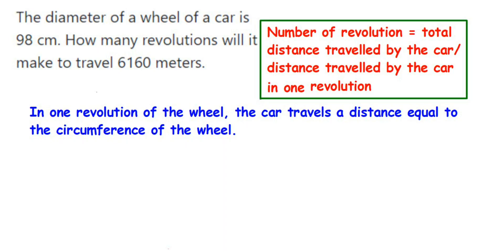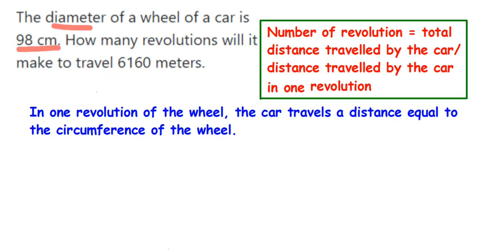Here's a question on circles. The diameter of a wheel of a car is 98 centimeters. How many revolutions will it make to travel a distance of 6160 meters? The diameter of the car wheel is given as 98 centimeters, and we need to find how many times the wheel will rotate to cover that distance.